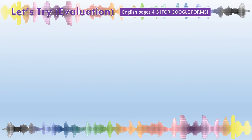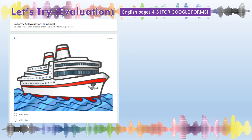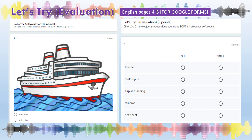Now, for those who will use Google Forms in answering the evaluation, please choose the sounds that are produced by the following objects on the first activity. While on the second task, kindly click loud if the object produces loud sound, and soft if it produces soft sound.